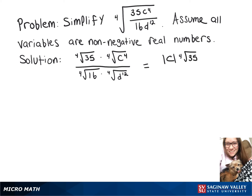And then on the bottom, the fourth root of 16 is 2, and then the fourth root of d to the twelfth, 12 divided by 4 is 3, so we got d to the third.